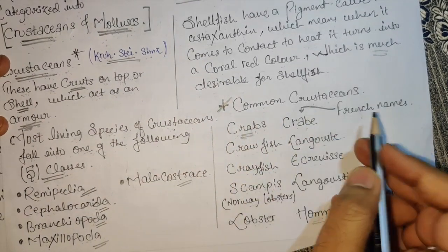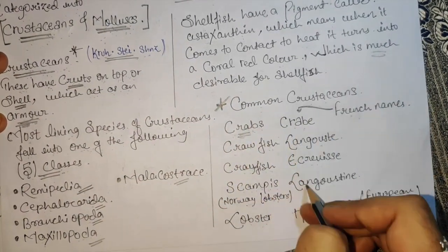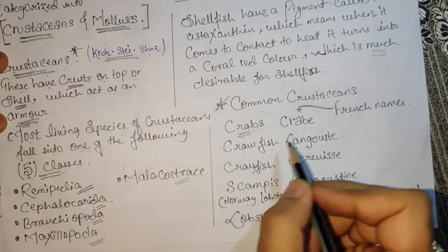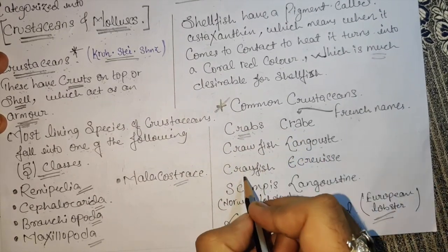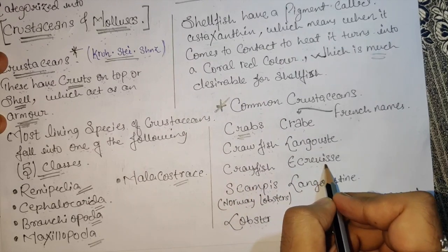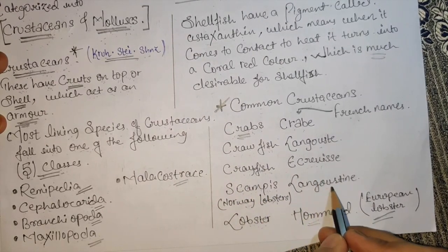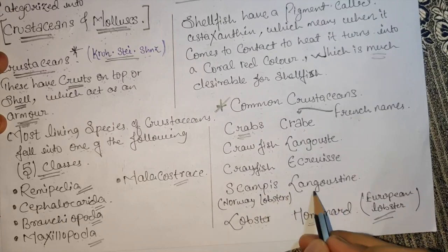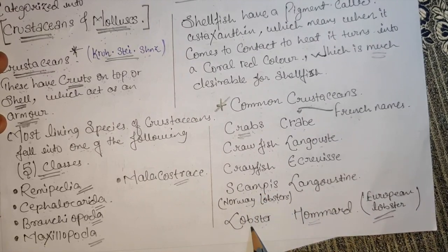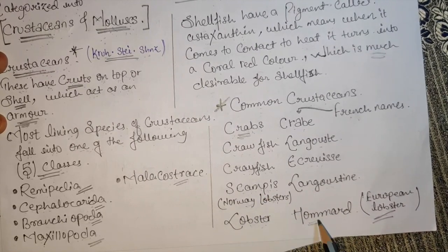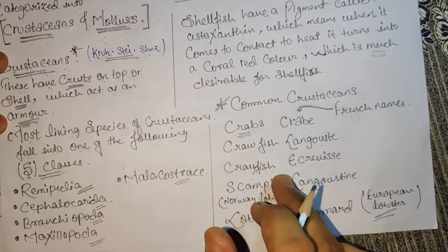Now let's look at common crustaceans. We have crabs — called 'crabe' in French. We have crawfish, called 'langouste.' We have crayfish, called 'écrevisse.' We have scampi, which is 'langoustine,' also known as Norway lobster. And we have lobster — 'homard' — the European lobster. These are the crustaceans.